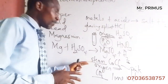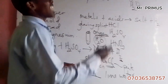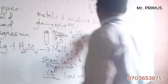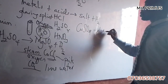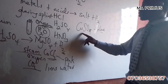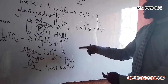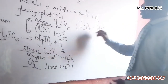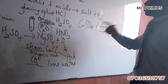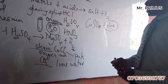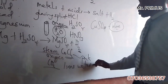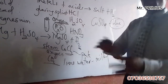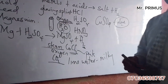Steam will turn cobalt(II) chloride pink, or anhydrous copper(II) sulfate — it will turn it blue. When it is anhydrous it looks white, but if steam is passed through it, it will form a blue solution, confirming it is steam. Carbon dioxide turns lime water milky. These are how to identify colorless and odorless gases.